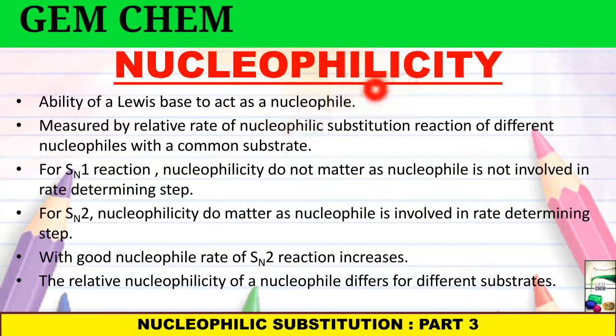What is nucleophilicity? It is the ability of a Lewis base to act as a nucleophile. That is, it will attack a substrate and this nucleophile will have a negative charge on it. This is measured by relative rate of nucleophilic substitution reaction of different nucleophiles with a common substrate. So here, a common substrate is taken and different nucleophiles are added to it in order to obtain the rate.